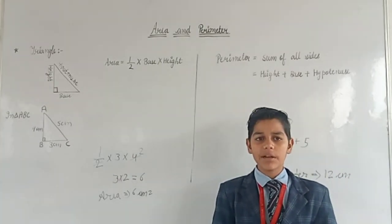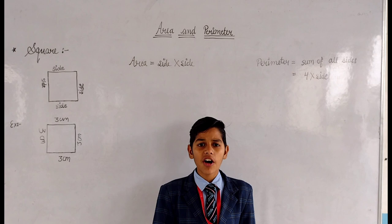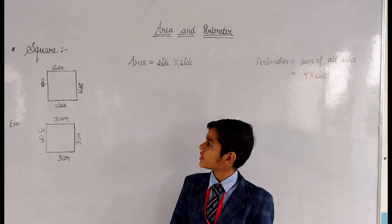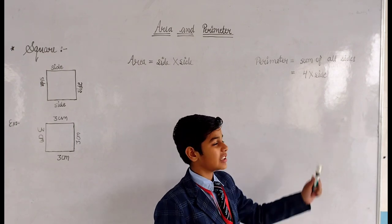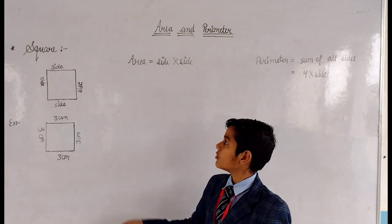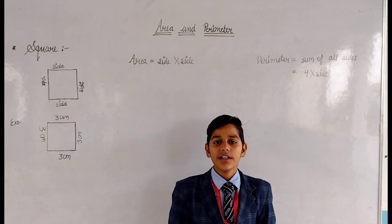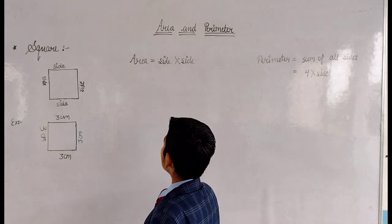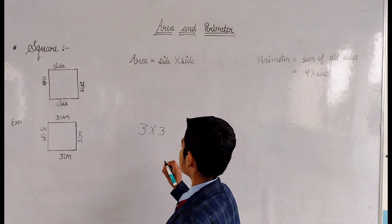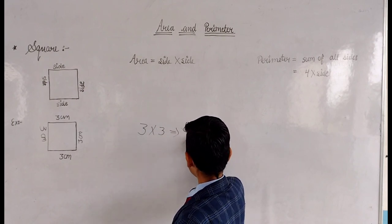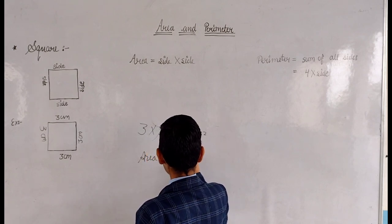So now we will learn about the area and perimeter formula of a square. To find the area of a square, the formula is side × side. To find the perimeter, the formula is 4 × side. We have an example where the side is 3 cm. So area = 3 × 3 = 9 cm².